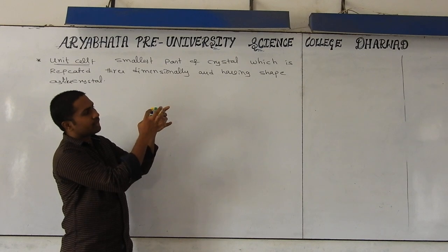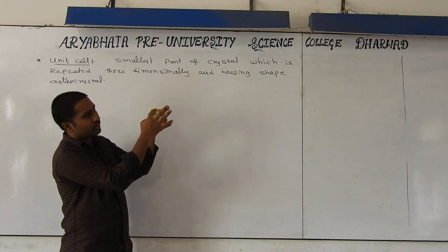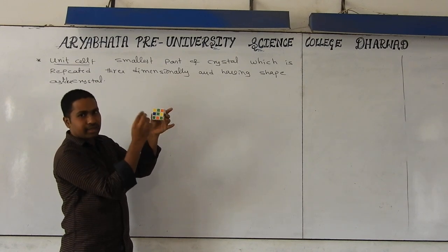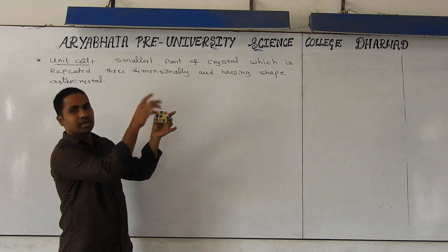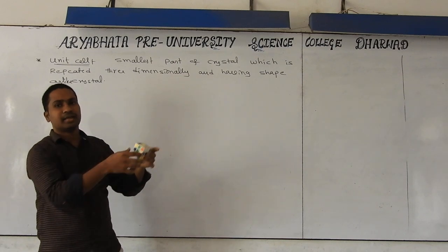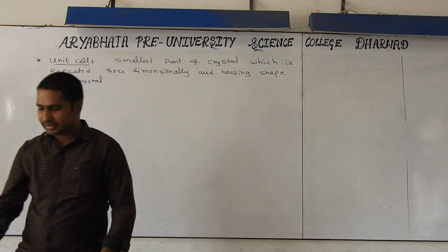In this massive cube, if you can take any smallest part — yellow, green, orange, blue — if you can take any smallest cubes, they are considered as a unit cell.